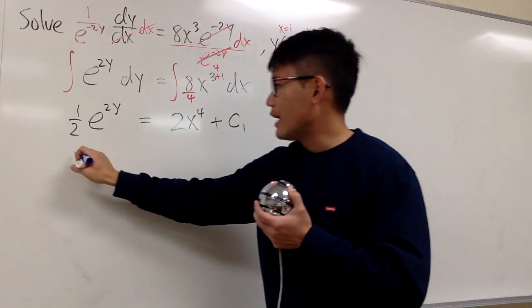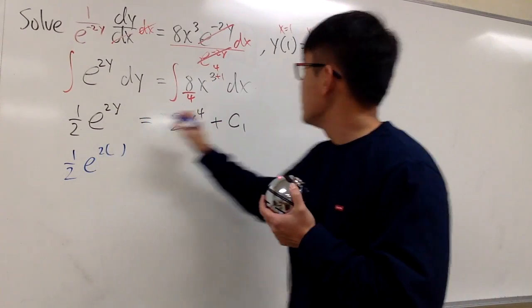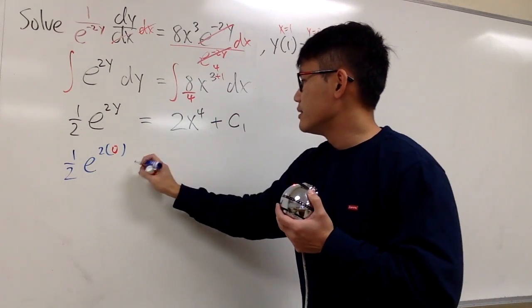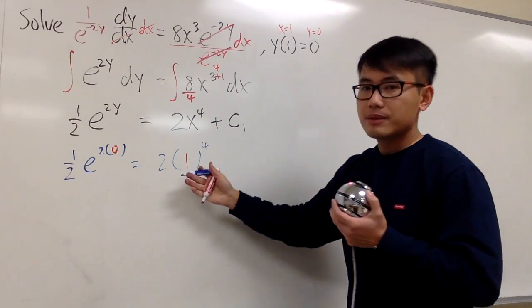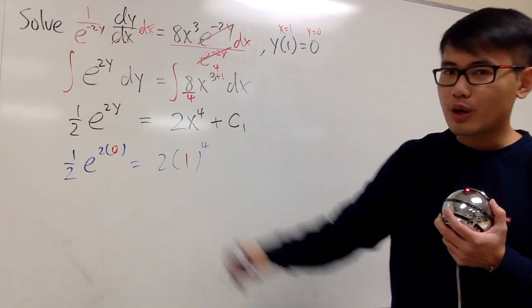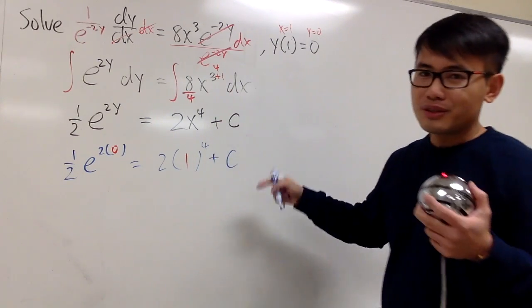So in here, we will have 1 half e to the 2 times y is 0. And this is equal to 2 times x is 1. So be sure when you do this kind of thing, plug in the right number with the right variable. Plus, I just need a c. I don't need a c1. So let me just write down c.